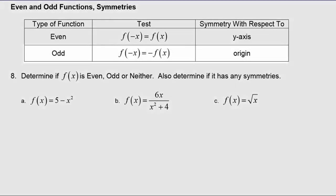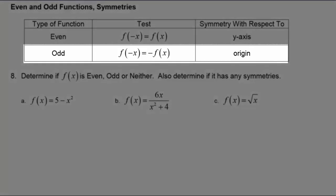If f of negative x is equal to negative f of x, then we say f is odd and will have symmetry with respect to the origin.